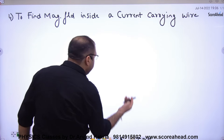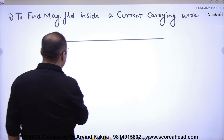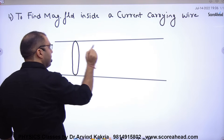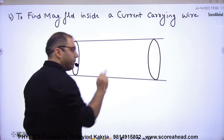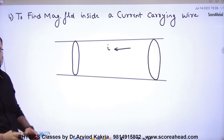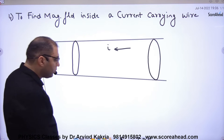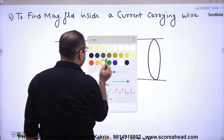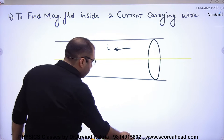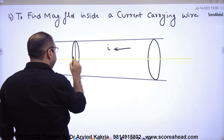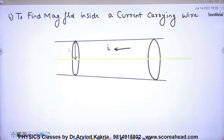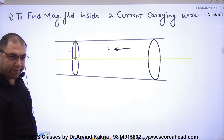But now I am going to imagine a long wire — it can be infinitely long. This is its cross-section. Current is going through this thick wire. The radius of this wire is A. So the current is going through this whole wire, whose radius is A.